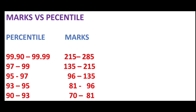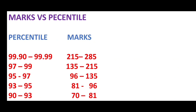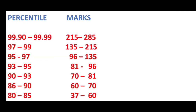The marks versus percentile analysis is as follows. If a student gets a percentile between 99.90 and 99.99, they can comfortably get marks between 215 and 285. For the percentile range between 97 and 99, the marks range should be between 135 and 215. For the percentile range between 95 and 97, the student needs to get marks between 96 and 135.